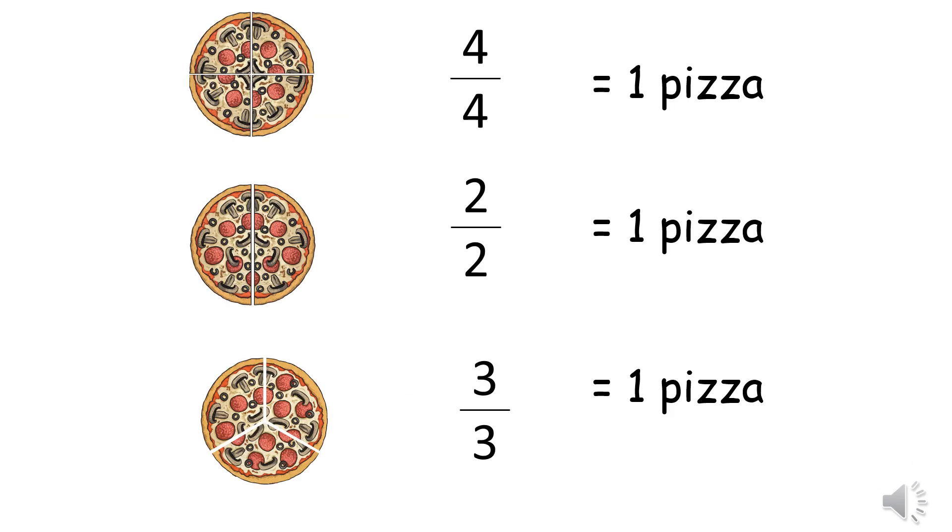On the screen in front of you are three pizzas. The first pizza has been split into four slices and the fraction next to it is four quarters. So we know that four quarters is equal to one whole or one pizza. The second pizza has been split in half and we can see that two halves make a whole or make one pizza. The third pizza has been split into thirds. Now there are three thirds and three thirds altogether make one pizza or one whole.